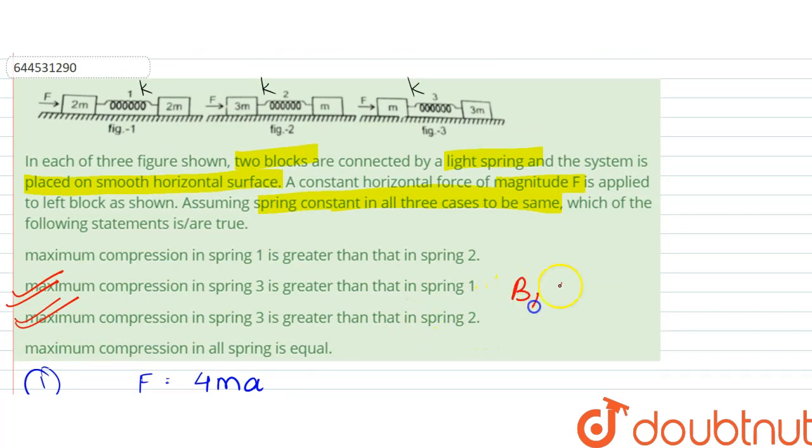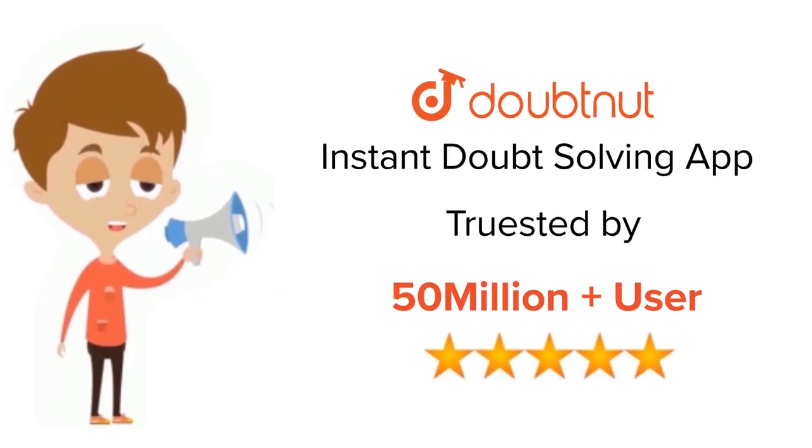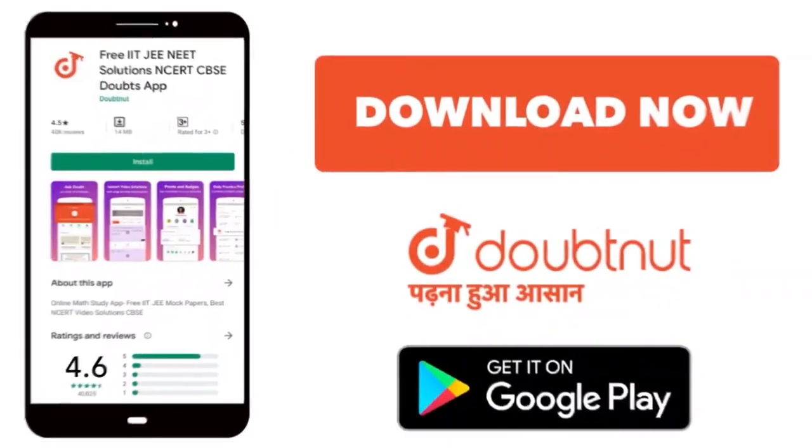So we can say that option B and C are the correct answers. Thank you. For class 6-12, IIT-JEE and NEET level, trusted by more than 5 crore students, download DoubtNet app today.